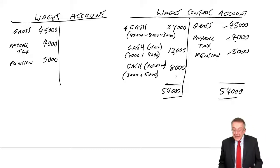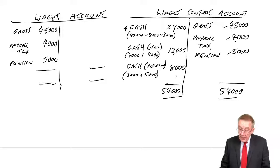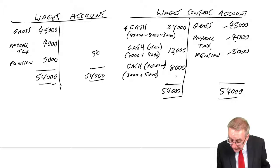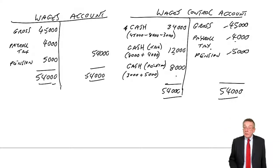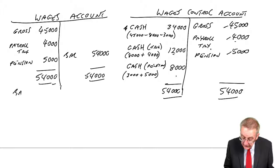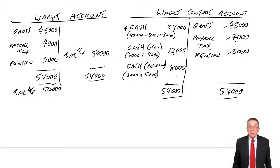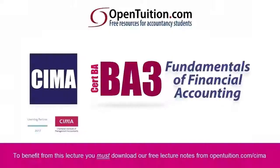What about the wages account? Well, this was the expense. So the total cost is $54,000. That's the total cost of employing these people. Their gross wages plus the extra tax and pension payable by the company. So the total expense, $54,000. This will end up in the statement of profit or loss as the expense for the period. Or given that we'd normally be doing this monthly, that will probably be carried forward as a balance. And so each month, that will get higher and higher. But at the end of the year, the total would go to the statement of profit or loss.